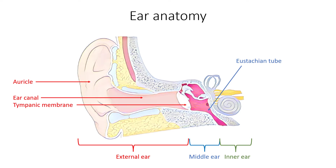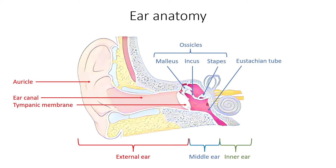Middle ear is also composed of three tiny bones collectively called ossicles. Malleus is attached to the tympanic membrane and articulates with incus, which articulates with stapes.